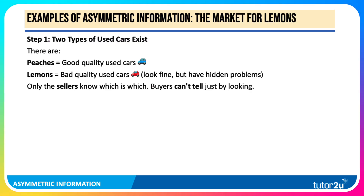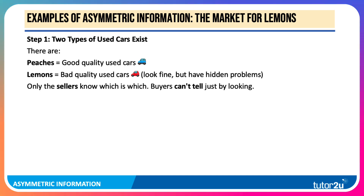Consider step one. In the second-hand car market, two types of used car exist. Peaches are good-quality used cars; lemons are poor-quality used cars — they may look fine, but they often have one or more hidden problems. Here's the asymmetry: only the sellers know which is which. Buyers can't tell just by looking.